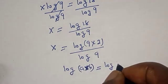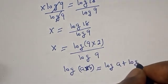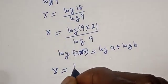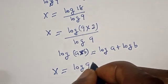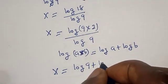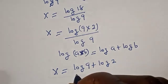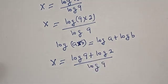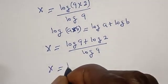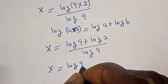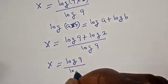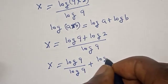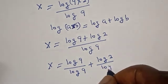So we have x is equal to log 9 plus log 2 over log 9. Then we can split this: x is equal to log 9 over log 9 plus log 2 over log 9.